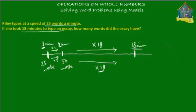When it was 1 minute, she had typed 25 words. So you multiply 25 by 18. Let's calculate: 18 times 5 is 90, and 18 times 2 is 36, plus 9 is 45 — giving 450. Since Riley types at 25 words per minute and she took 18 minutes, the essay had 450 words.